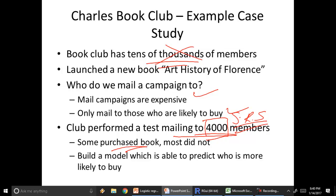Based on that, some of them purchased a book, some did not. Whoever purchased a book is categorized as one, whoever doesn't purchase is categorized as zero. We build a model which is able to predict who is more likely to buy. We build this model on these 4000 customers, apply that model to the rest of the customers, then segment the dataset and only mail to the people who are likely to buy.